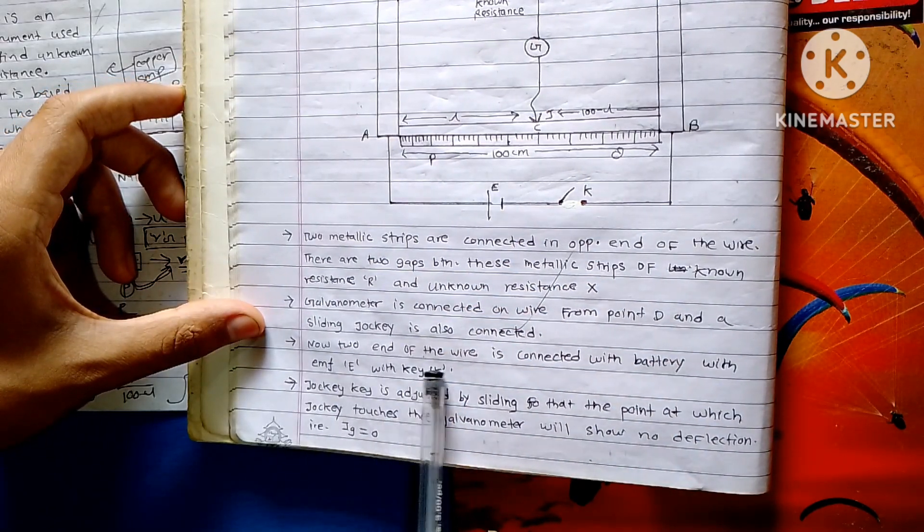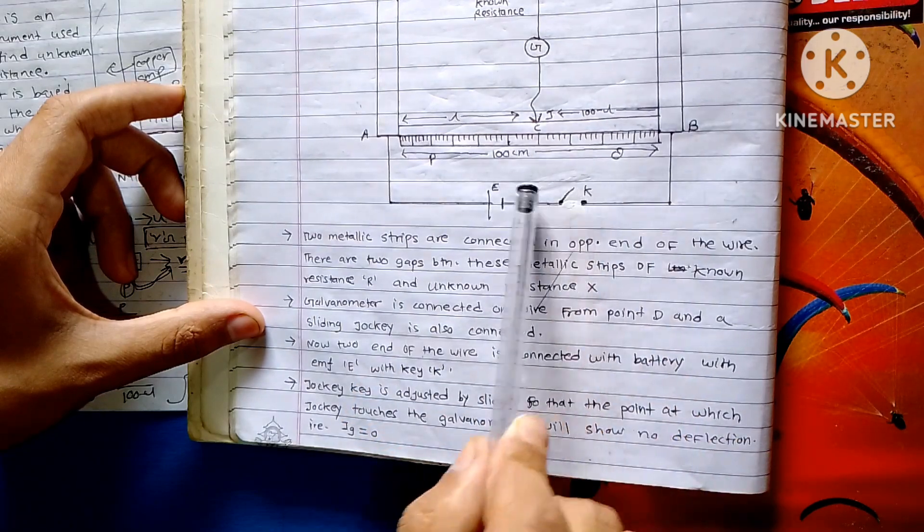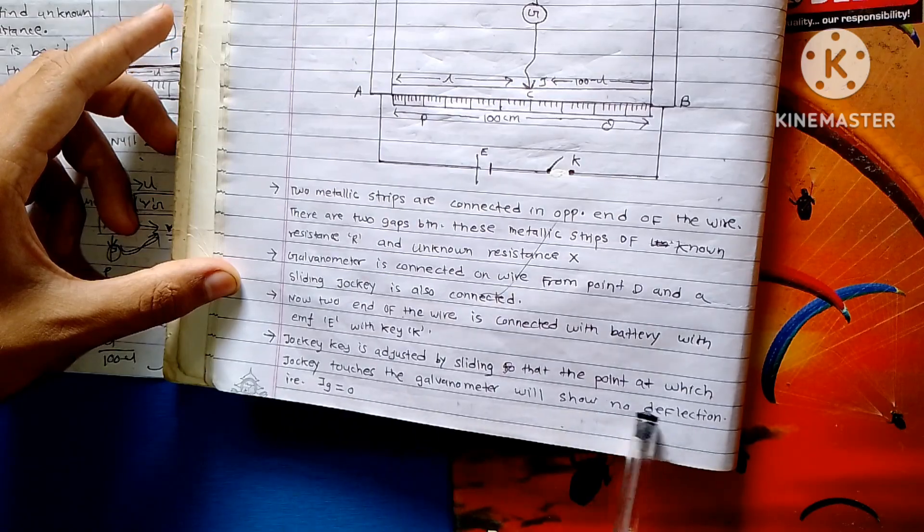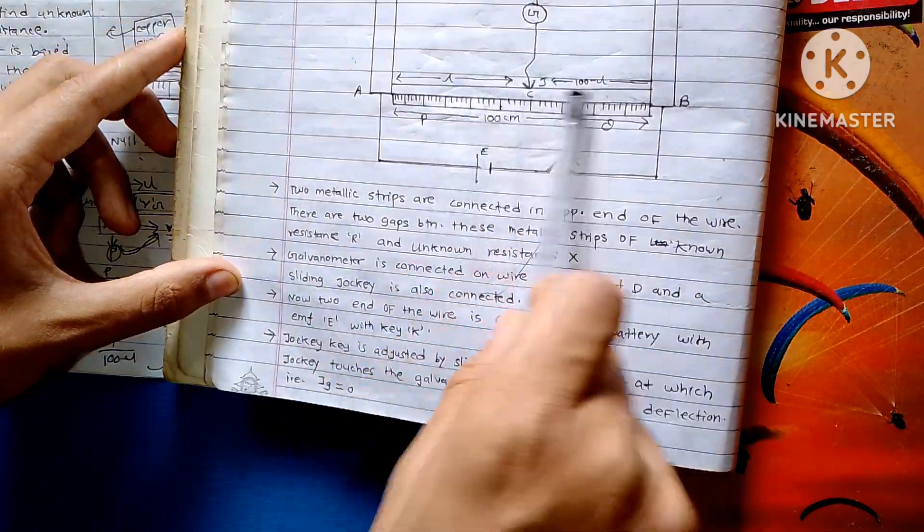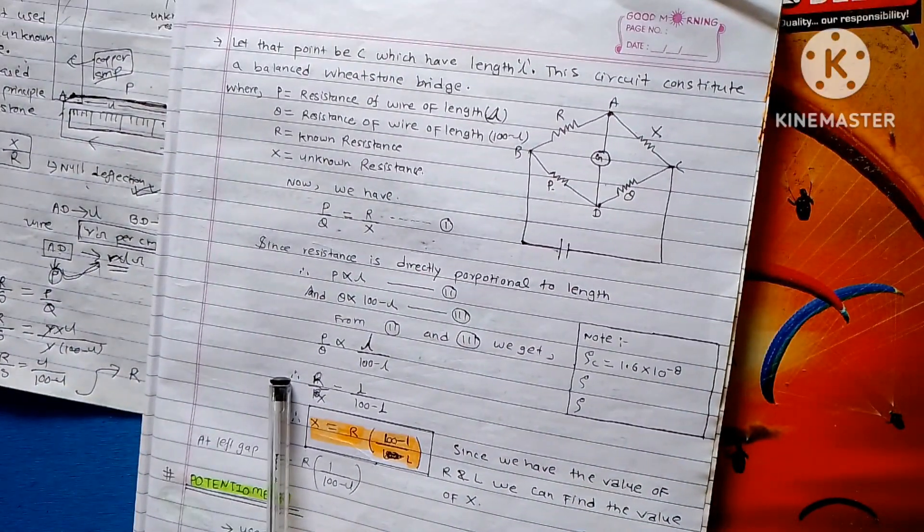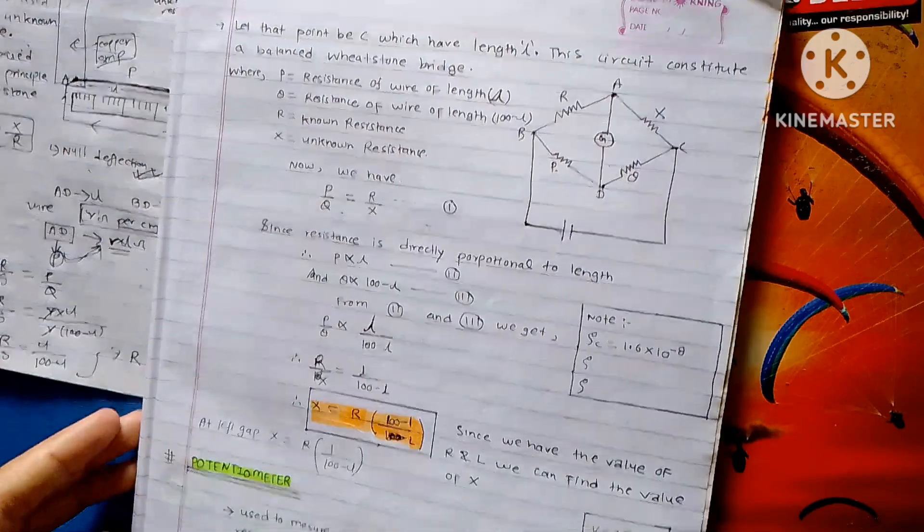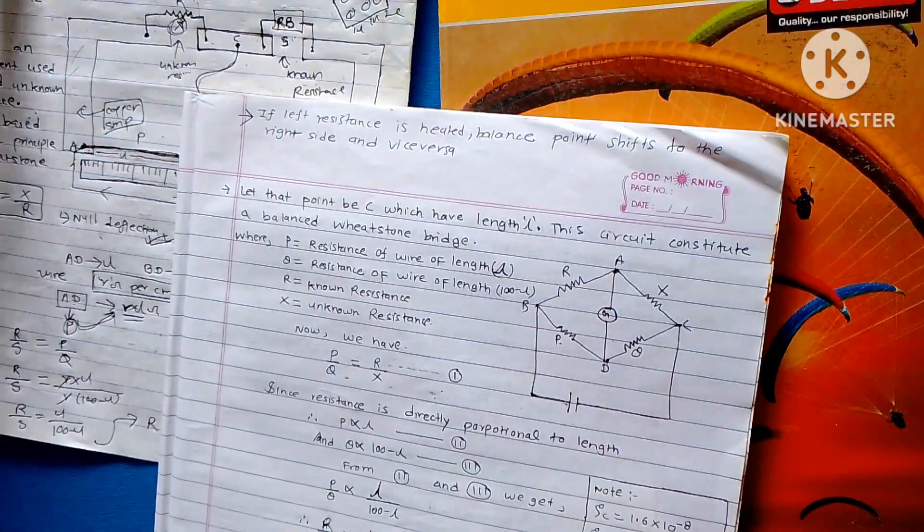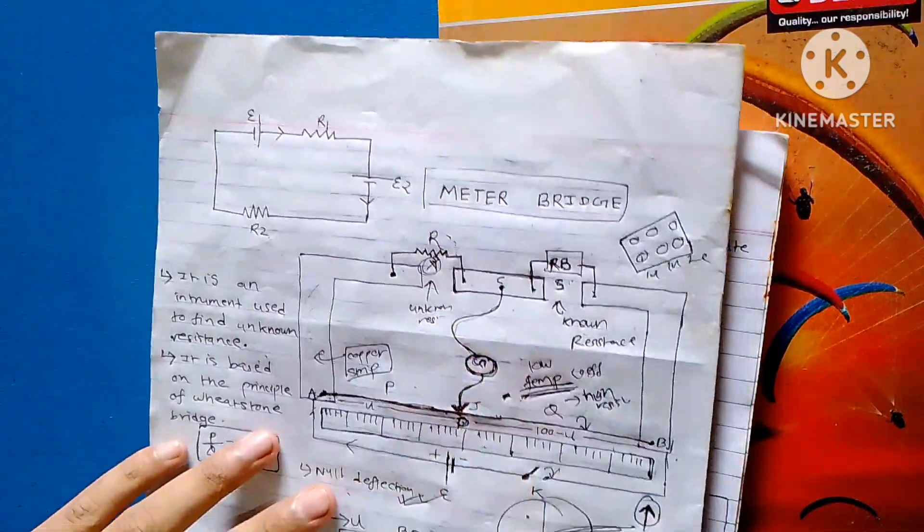Now the two ends of the wire are connected with the battery of EMF E with key. The key is sliding, so point goes into the graph. If we have a point we determine, if we have two points we can also determine. If we reduce current, we can also freeze the varies. We can see the balance point here.